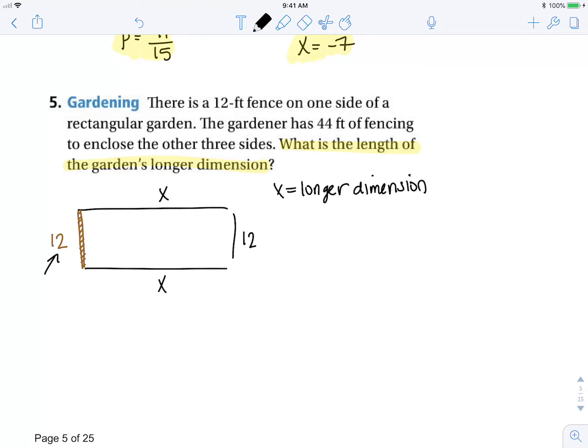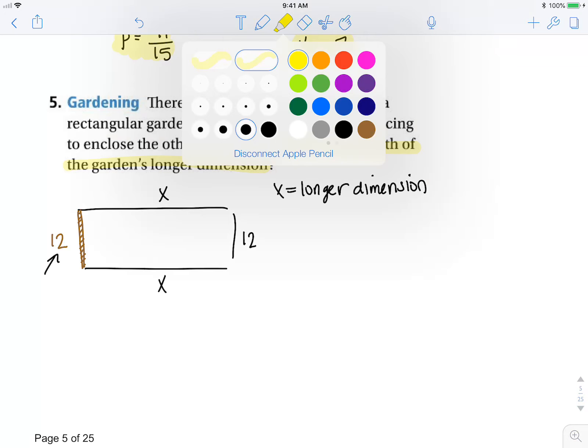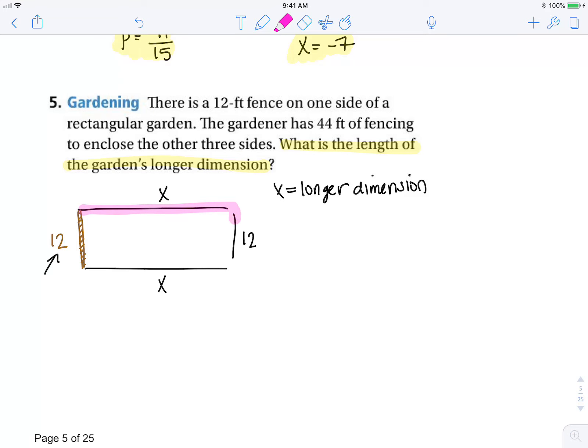We know the gardener has 44 feet of fencing to cover these three sides. So 44 feet must equal x plus x plus 12, which is the length of those other three sides of the garden.